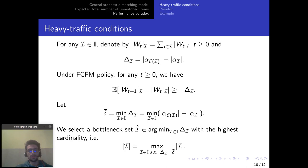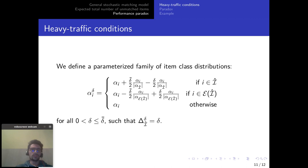So the next step to this heavy traffic condition is to define a parameterized family of item class distributions called alpha delta such that the minimal draining time for our bottleneck set is equal to delta and so will tend to zero as delta tends to zero. And this is the only independent set in that case all of our independent set have a minimal draining time which will tend to a strictly positive value as delta tends to zero.